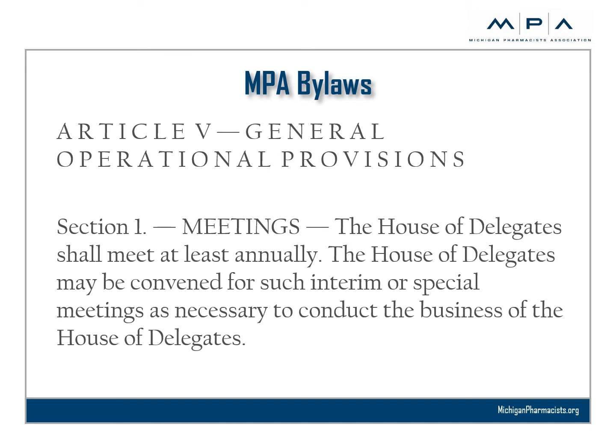The area of the MPA bylaws covering the House of Delegates is Article 5, General Operational Provisions. There are Sections 1 through 4, and we will review each of these in turn. Section 1, Meetings: the House of Delegates shall meet at least annually. The House of Delegates may be convened for such interim or special meetings as necessary to conduct the business of the House of Delegates.